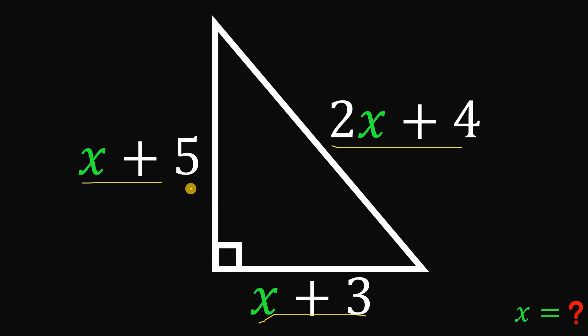And of course, to have a legit right triangle, this x plus 5 must be greater than 0. It follows that x must be greater than negative 5. Also, this sideline x plus 3 must be greater than 0. It follows that x must be greater than negative 3.